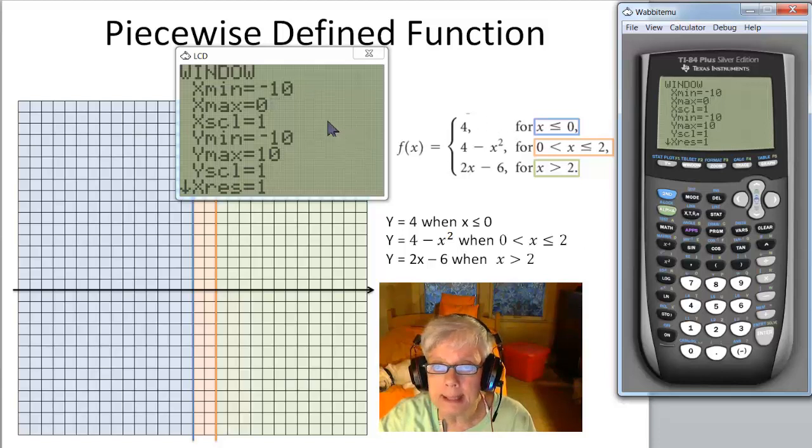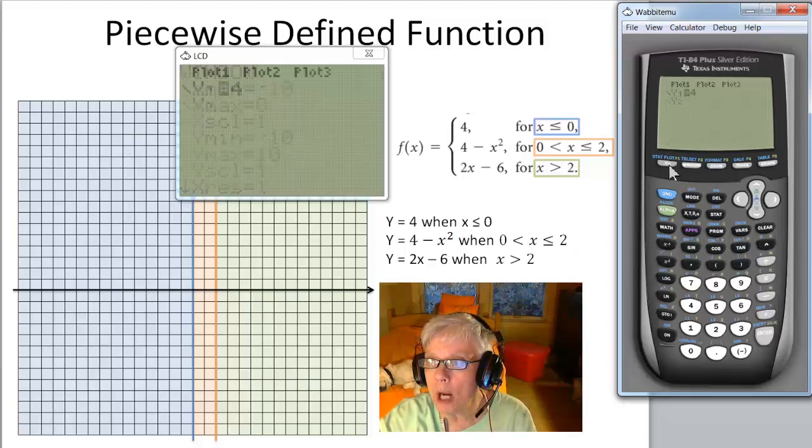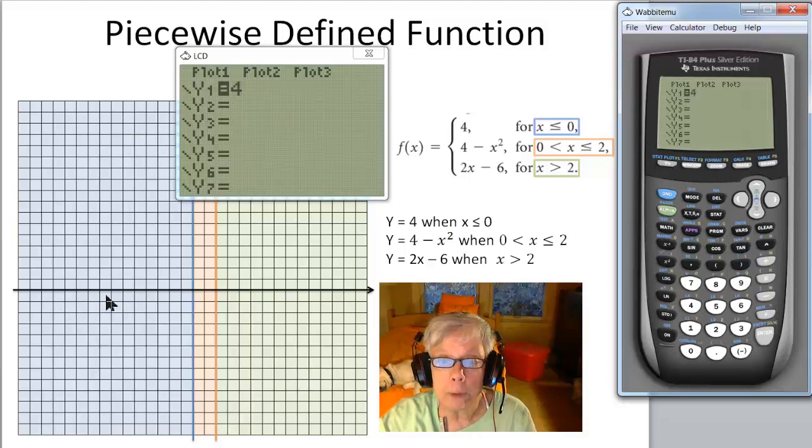Now, what that does is that says that x, as far as we can see on the graphing calculator, is going to go from negative 10 over here to 0 here. And now we're going to take a look at that graph again, y equals 4, but now we're just going to go on the blue part.